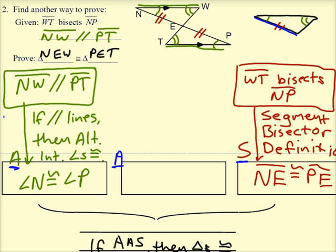Okay, so from the fact that N, W is parallel to P, T, that gave us this first pair of angles, that N and P were congruent.